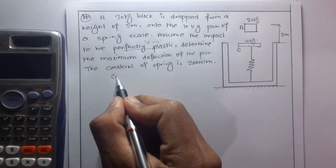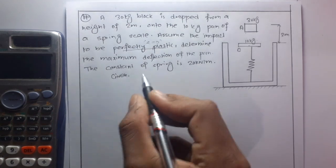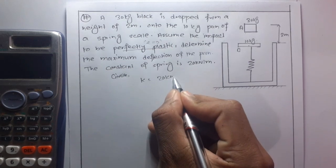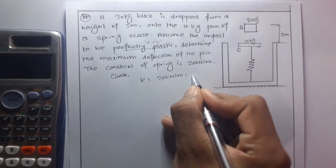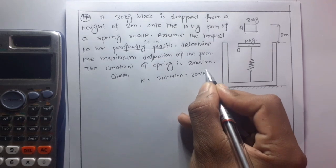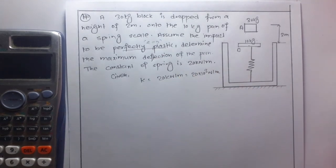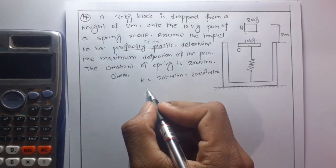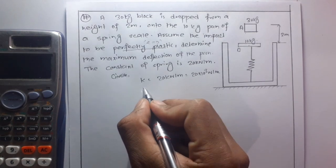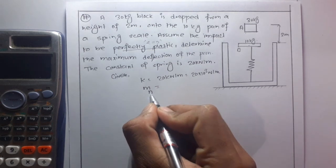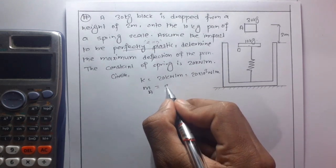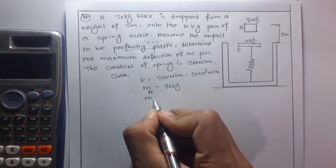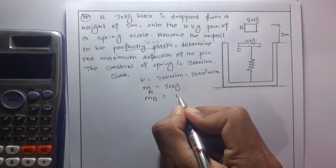Given: the spring constant k is equal to 20 kilonewton per meter, which is 20 into 10 to the power 3 newton per meter. The mass of block A is 30 kg and the mass of B is 10 kg.